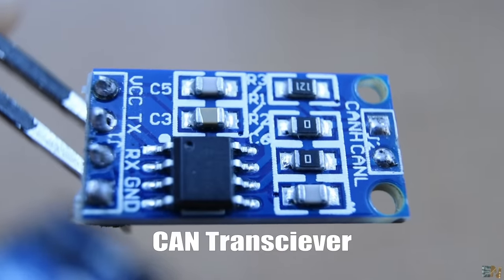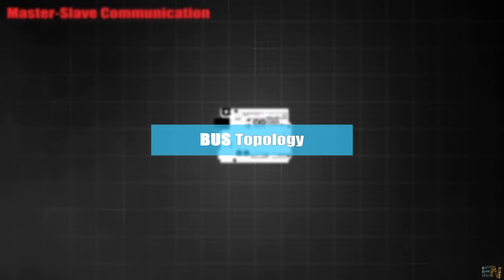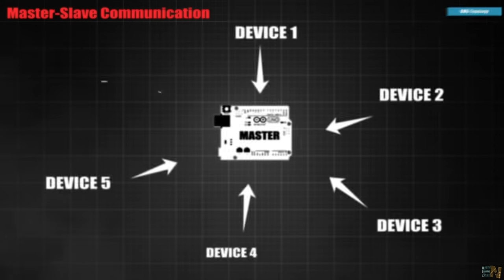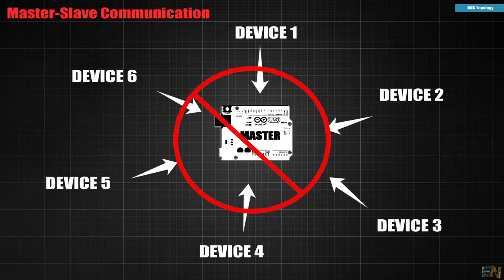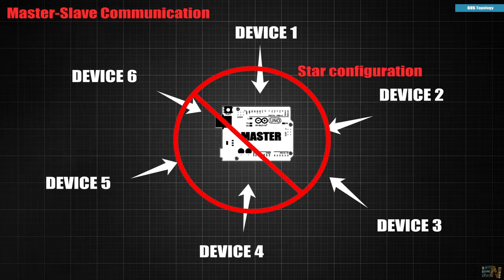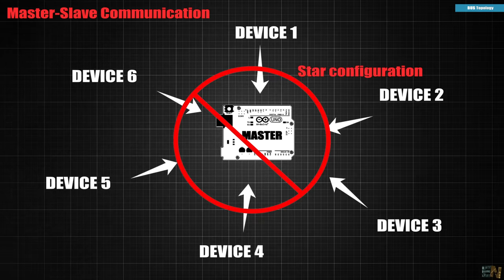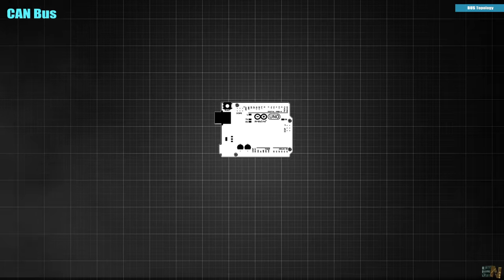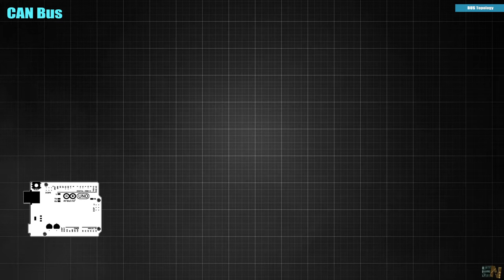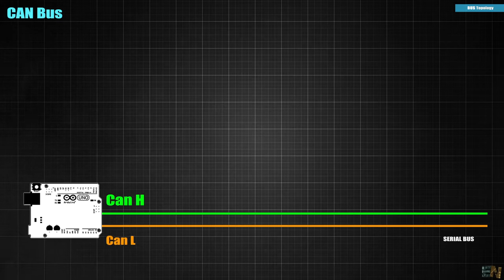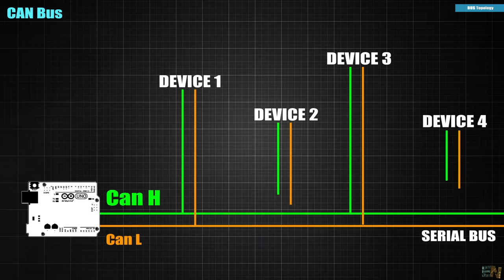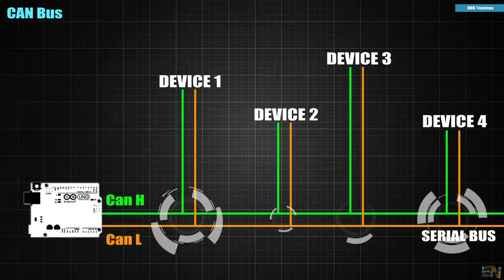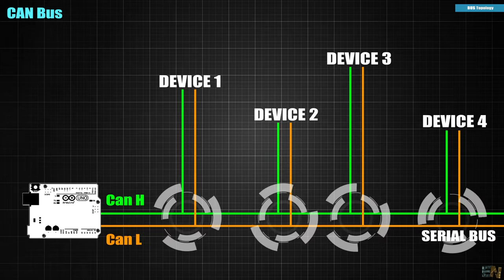So let's start with part number 1, why is this a bus topology? Well first of all, the CAN communication doesn't need a host or so called master-slave connection where each device is connected to the master in a star configuration. With CAN, all devices can send the data. So instead of having each device connected with a separate connection to a master device, we have a bus, basically the H and L lines and then each device will connect its CAN pins to this bus.